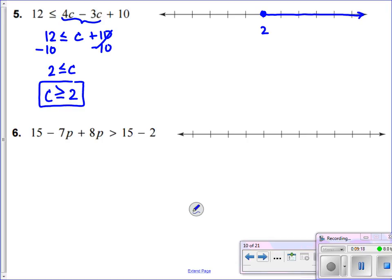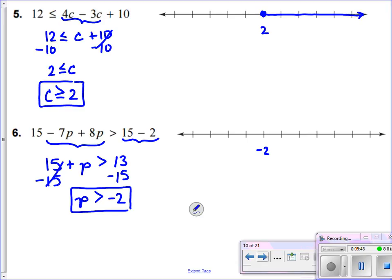For number 6, we've got quite a bit of cleaning up that we can do on both sides. I've got a negative 7P plus 8P. So, I've got that positive 15 along, and when I combine like terms, I get plus 1P greater than. And then 15 minus 2, I can clean that up as well. It's 13. Now, I can solve for P. Just subtract 15 from both sides. P is greater than negative 2. Now, I'm going to plot negative 2 on my number line. I want all numbers greater than. This was fortunate. We had our variable on the left. So, I can read that as all numbers that are bigger than negative 2. Open circle. Go to the right.